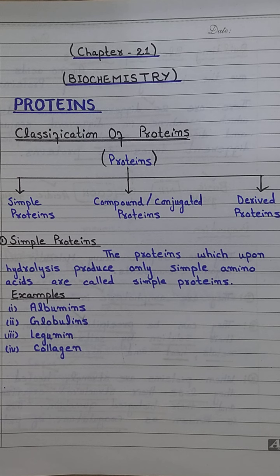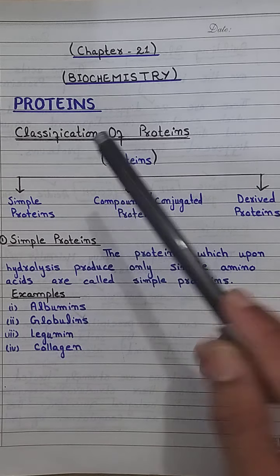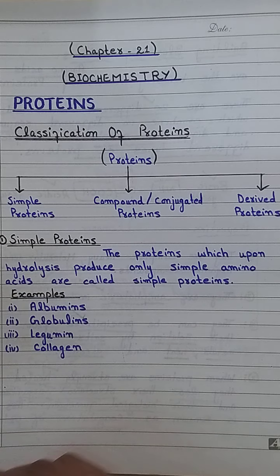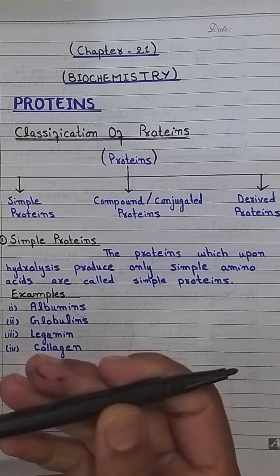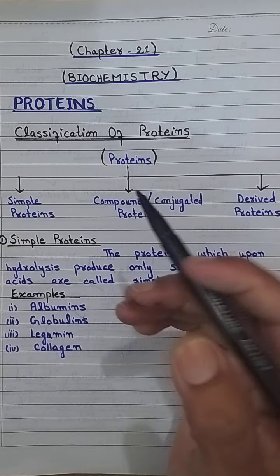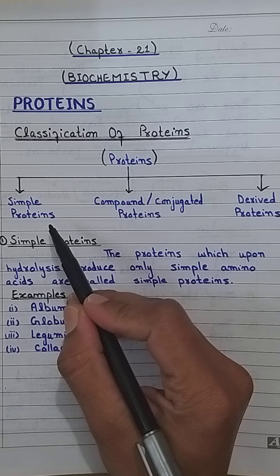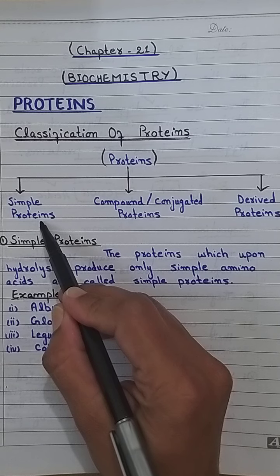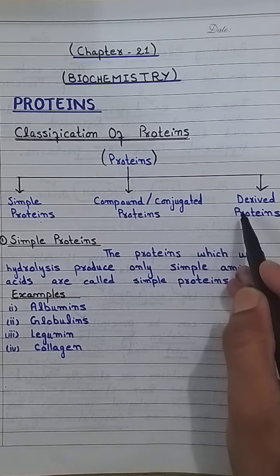Assalamualaikum students. Today your next topic is biochemistry: classification of protein. You have already covered the definition and properties of protein, and now we move to classification of protein. Proteins are classified into 3 basic groups: simple proteins, compound and conjugated proteins, and derived proteins.